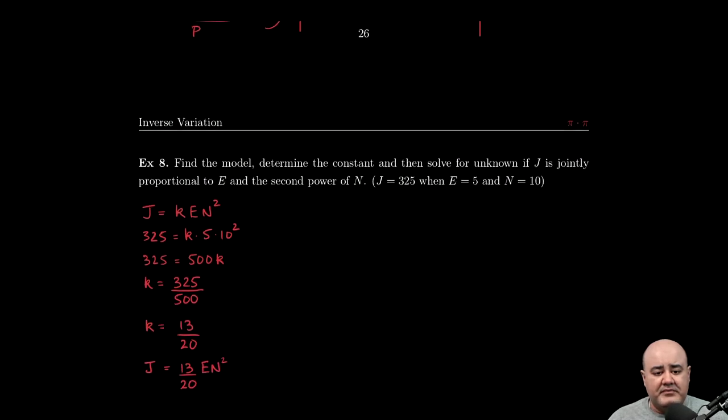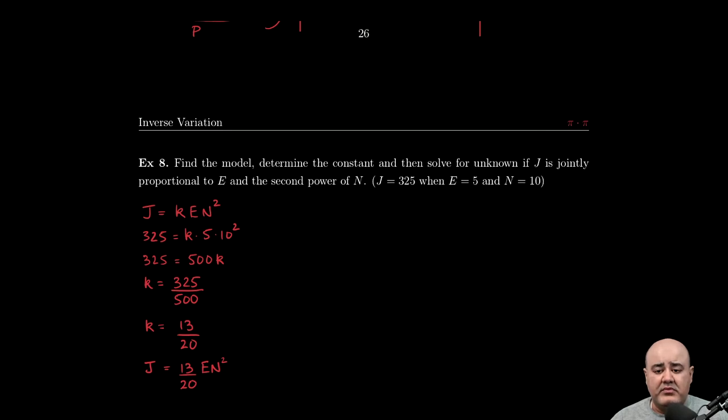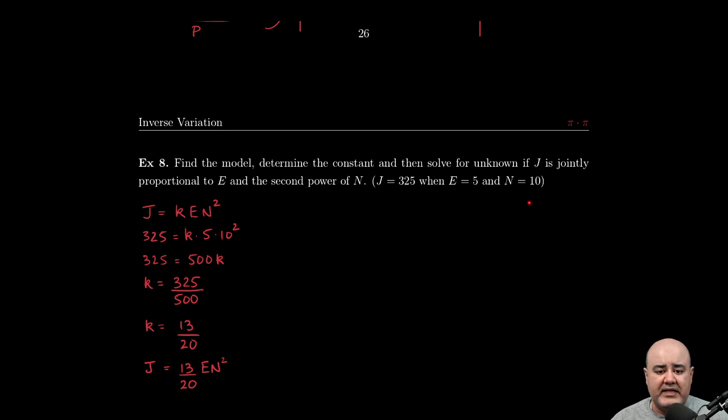So once you've done that, we move on to example eight. Here we're asked to find the model, determine the constant, and then solve for the unknown. If j is jointly proportional to e and the second power of n, and then we're given three conditions: j is 325, e is 5, and n is 10.